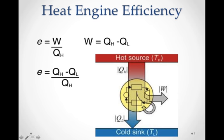And of course, our work output was equal to the high heat minus the low heat. The heat coming in minus the heat going out of our system. So our overall heat engine equation here is the difference in the high heat and low heat divided by the high heat.